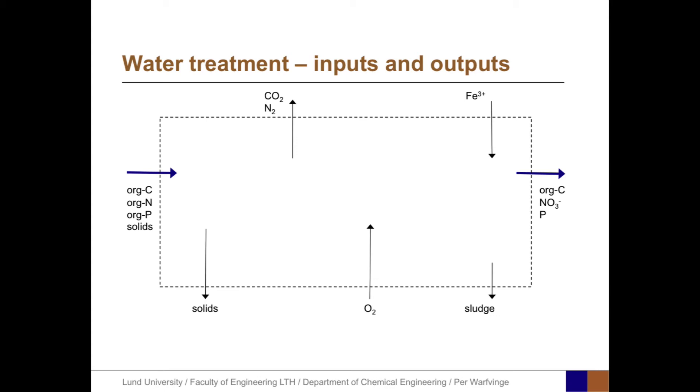If we look at the inputs and outputs, we get a more realistic picture. Starting from the left, we have the input stream. First, solids are removed. Then carbon as CO2 and nitrogen as N2 leave the system. Further in the process, we need to add oxygen. Later, we add iron in the form of iron ions. We have sludge as an output stream. This is one representation, but this picture says nothing about what goes on within the system.